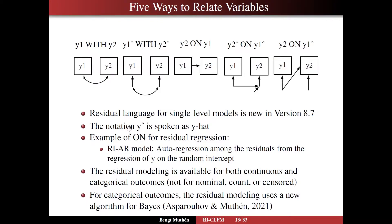And the y hat notation is spoken as y hat. And as an example we have the RIAR model where we have autoregressions among the residuals from the regression of the y's on the random intercept. Now this residual modeling is available for both continuous and categorical outcomes but not for nominal outcomes or counts or censored variables.